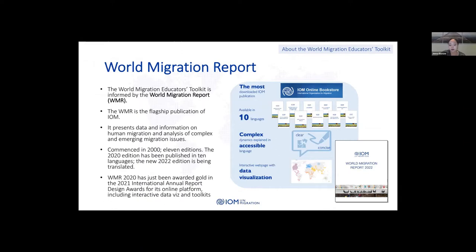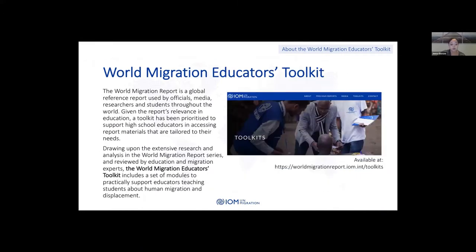The 2020 edition is available in 10 languages and the current 2022 edition is available with some core chapters in English, French and Spanish, with other translations currently being undertaken. The WMR 2020 has been awarded gold in the 2021 International Annual Report Design Awards for its online platform, including interactive data visualization and toolkits. The World Migration Report is a global reference report used by officials, media, researchers, teachers and students throughout the world.